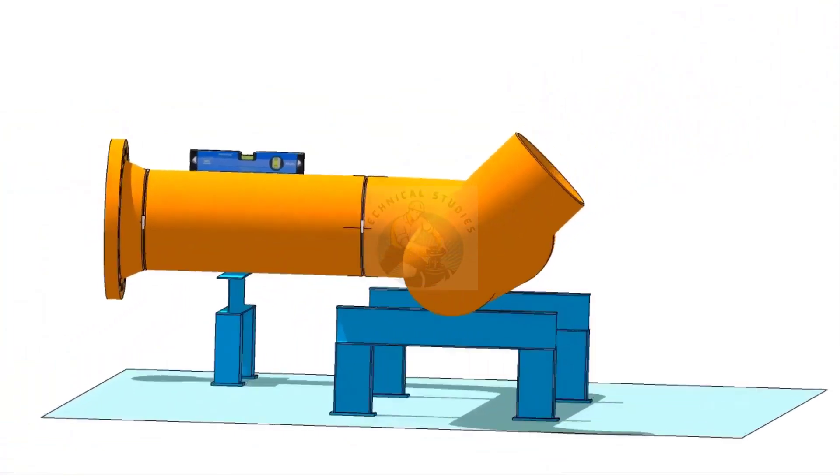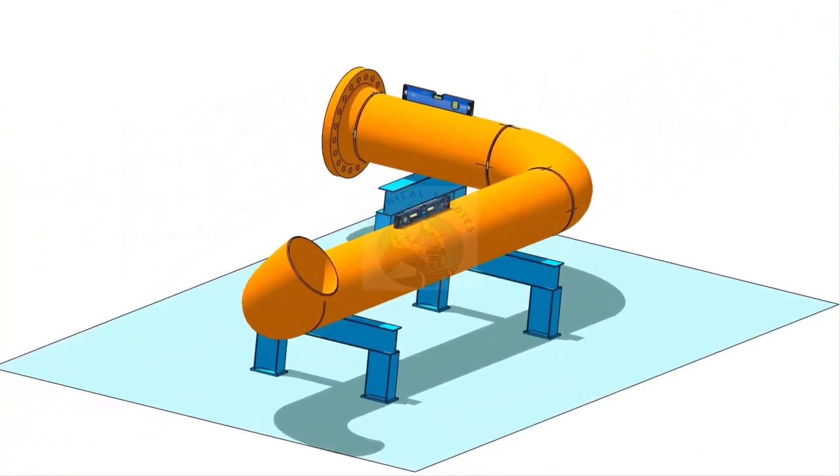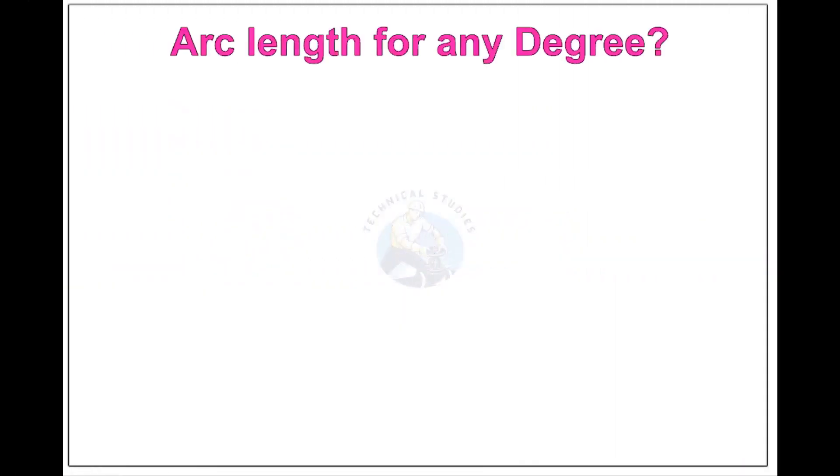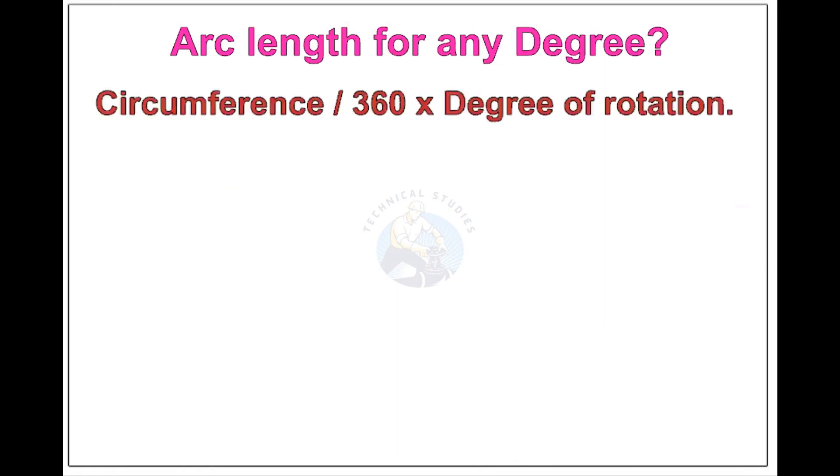Now, see the formula and calculations for finding the arc length of any degree rotation, with example. Arc length of any degree: Circumference of the pipe divided by 360 into the degree of rotation.